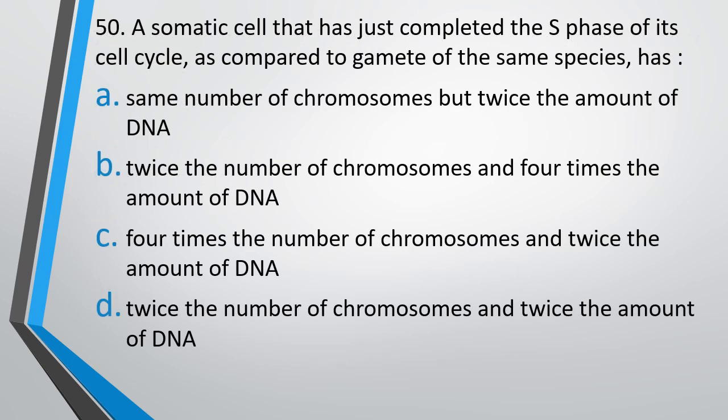Question number 50. A somatic cell that has completed the S phase of its cell cycle, as compared to a gamete of the same species, has: same number of chromosomes but twice the amount of DNA; twice the number of chromosomes and four times the amount of DNA; four times the number of chromosomes and twice the amount of DNA; or twice the number of chromosomes and twice the amount of DNA. Correct answer is option B — twice the number of chromosomes and four times the amount of DNA.